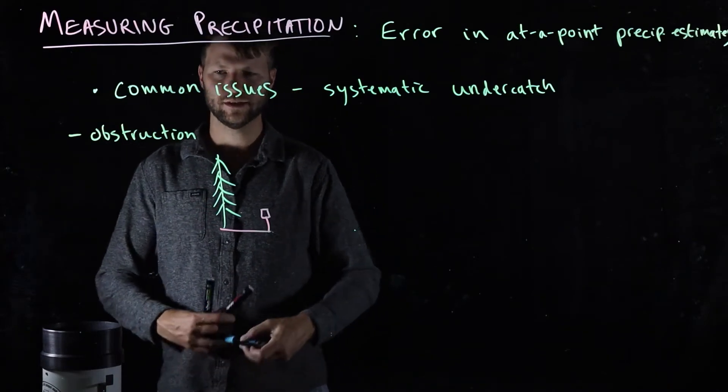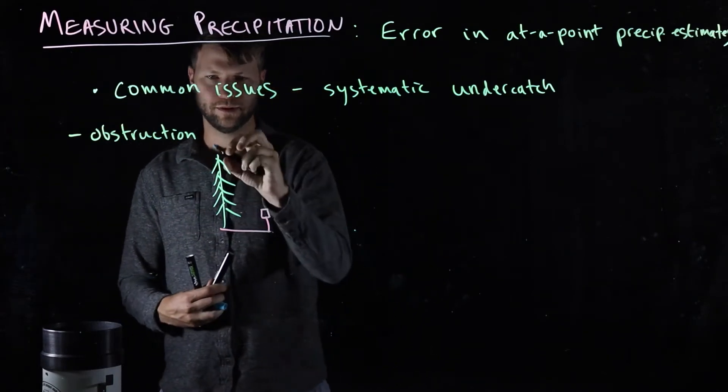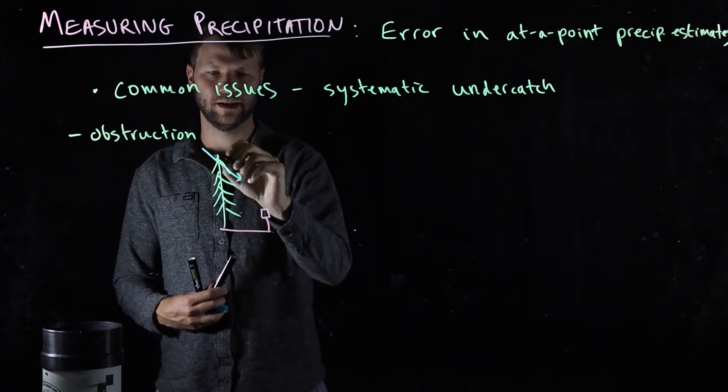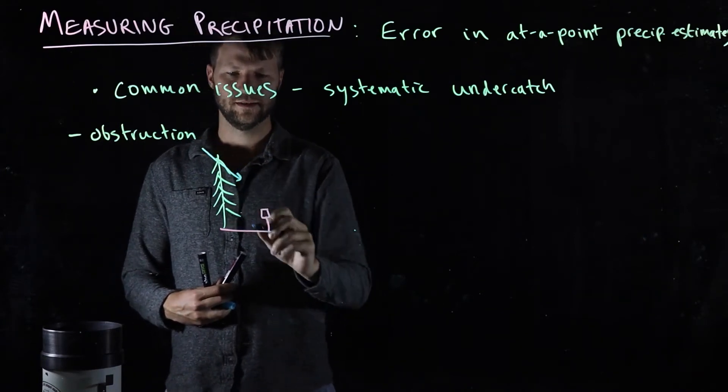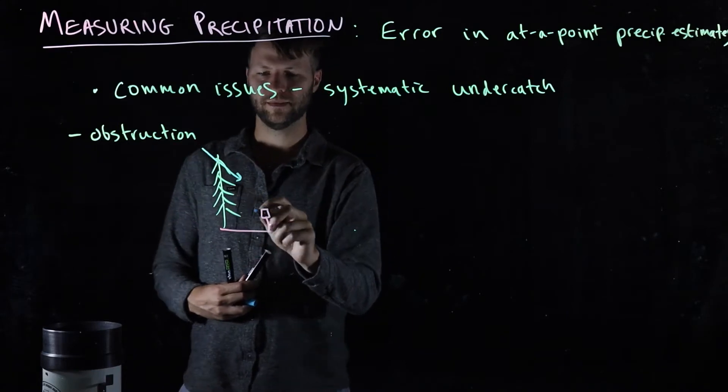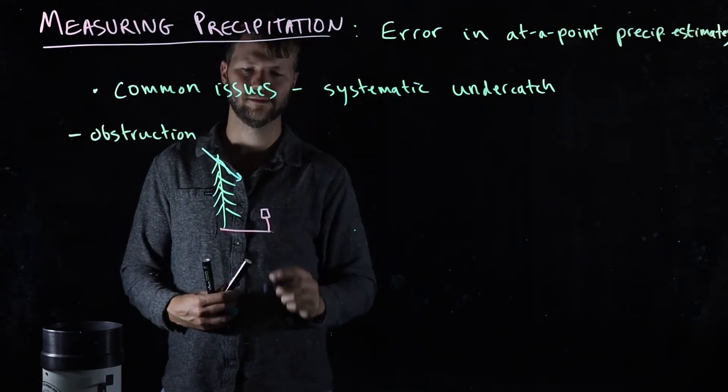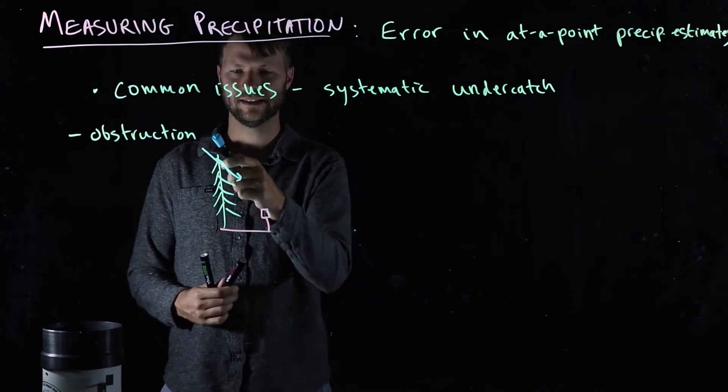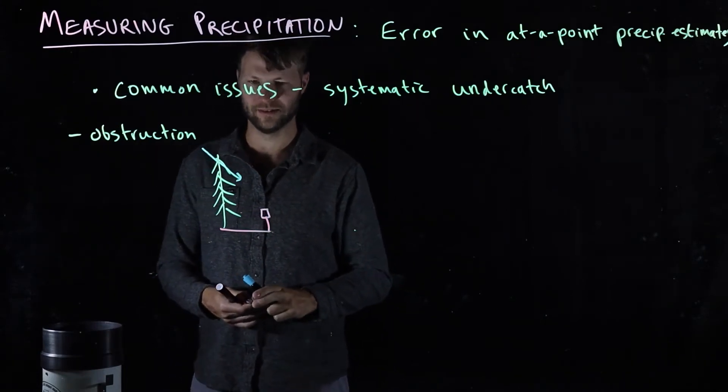The issue here is that if it's windy, for example, let's say the wind is coming in this way and it's causing the rain to blow this way, this obstruction or the tree is going to block some of the rain from reaching the gauge. And therefore, it's going to result in an underestimation of the actual amount of rain that's falling.